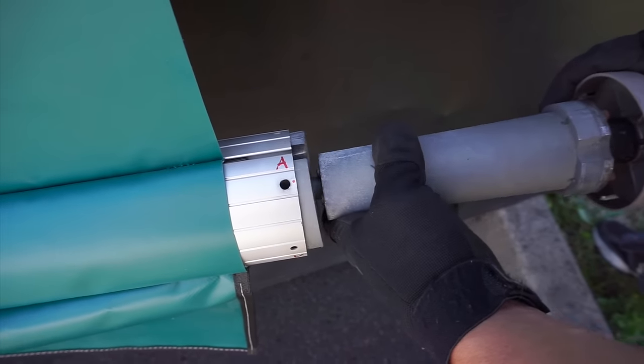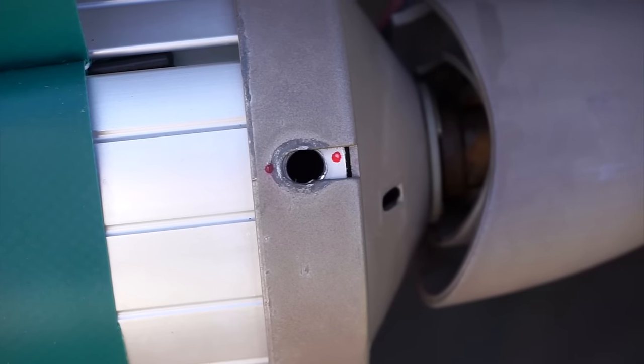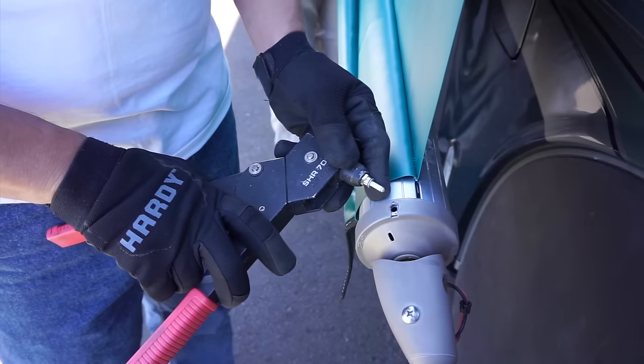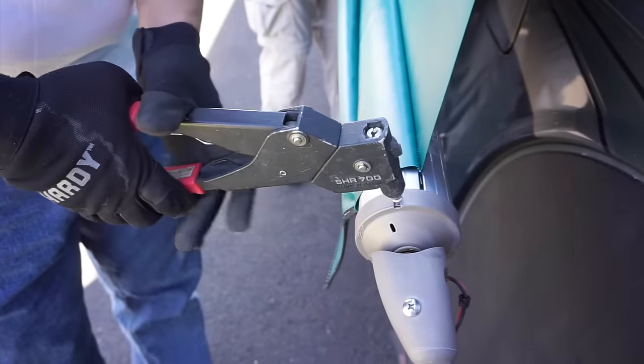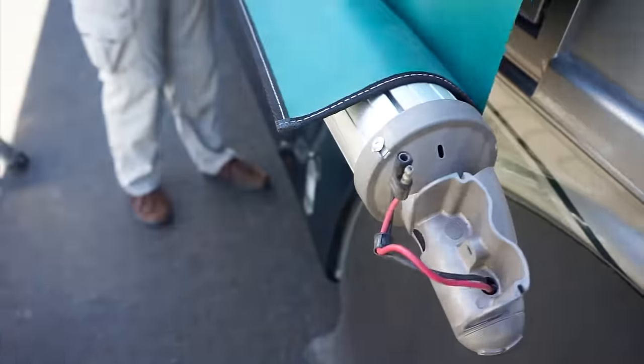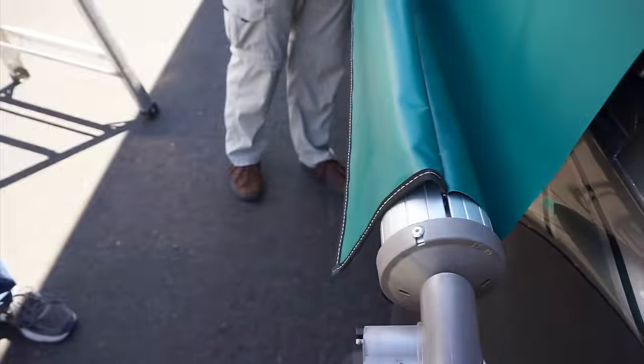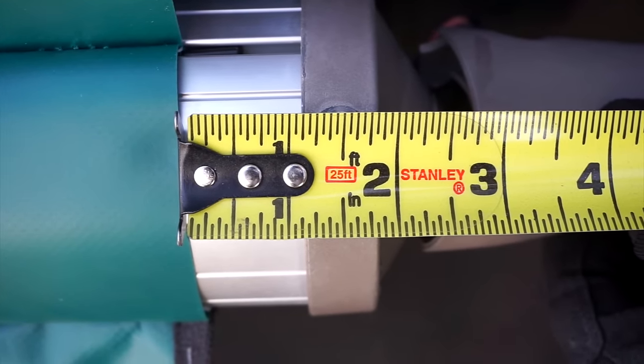Insert the motor into the front end. Make sure to align the two dots you made earlier. Use your pop rivet gun to install new rivets in all three holes, securing the motor to the end of the roller tube. Now check both ends to be sure the fabric is centered between the end caps.